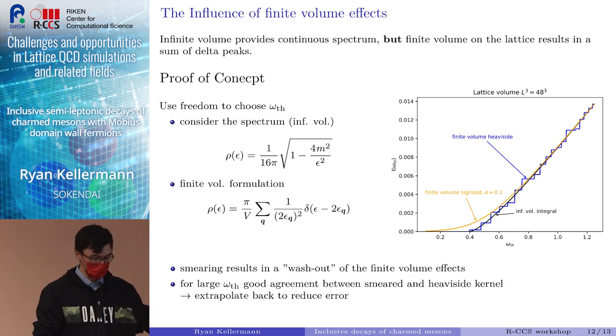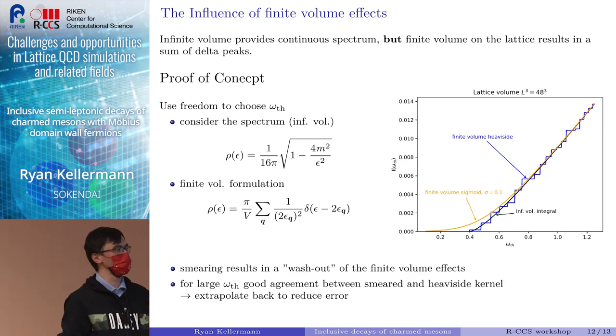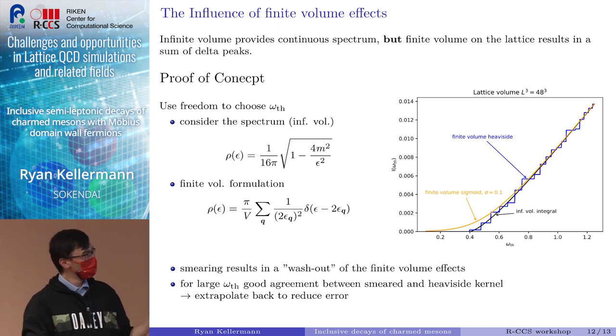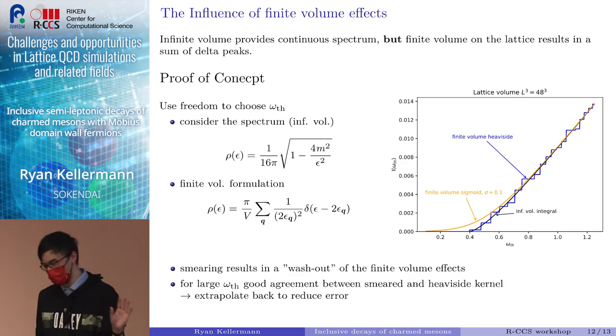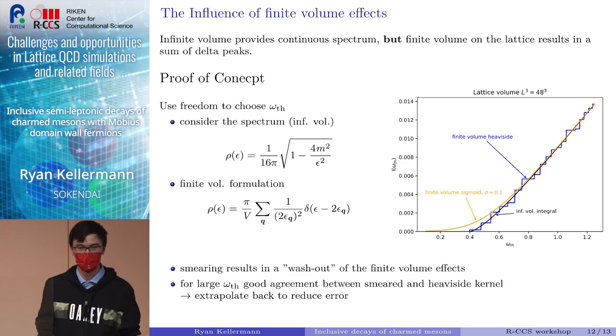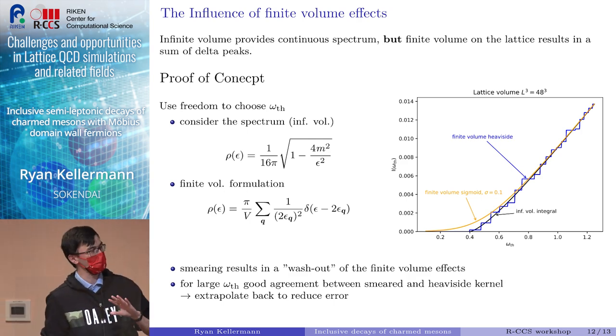The idea is then to extrapolate backward from somewhere up here to our physical threshold value, which lives somewhere in this region. But this example shows that it works, but it's really just a very simple example. Once we include the real kernel function, it might look different. And once we include errors, it might look different again. So this looks very nice, but we don't know if it works perfectly once we include real data and go toward more realistic examples.